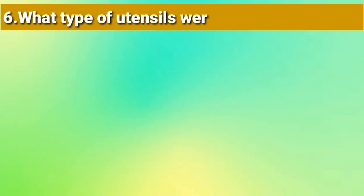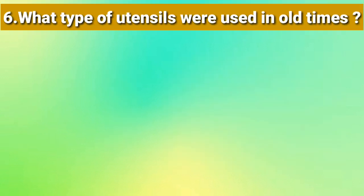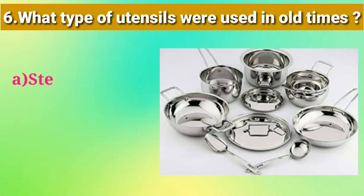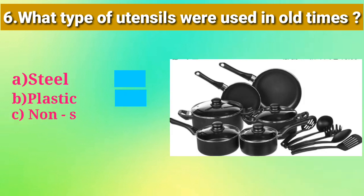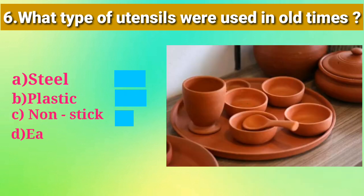And the last question is: what type of utensils were used in old times? The options are steel, plastic, non-stick, or oven. The right answer is option D — Ardhan.